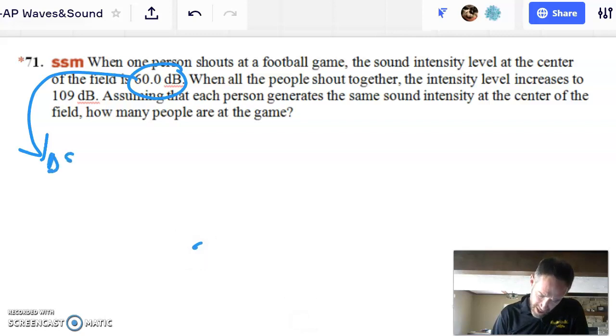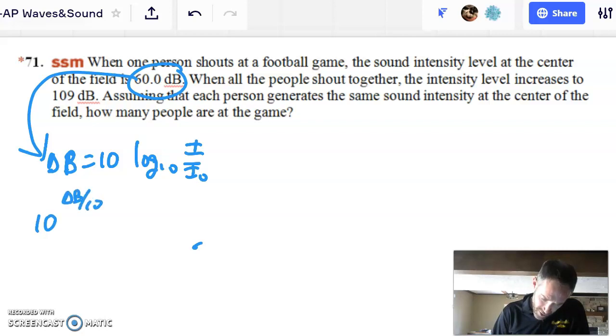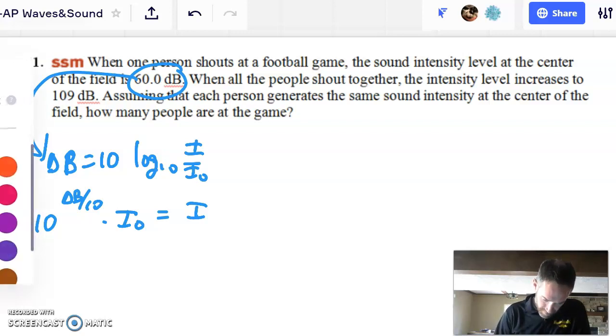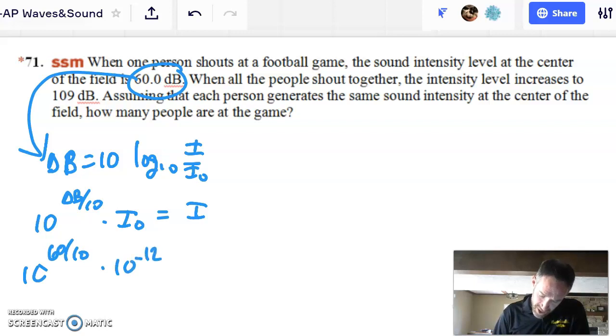Well, the change in sound level, 10 log base 10, i over i naught. Here are the same steps that I did a second ago. And I end up getting 10 to the change in sound level over 10 power times i naught is equal to the intensity of each person. So this time I can say that this is 10 to the 60 over 10 or 10 to the 6 times 10 to the minus 12 for the threshold of hearing is equal to the intensity. And so I'm going to get the intensity for one person is 10 to the minus 6 watts per square meter.